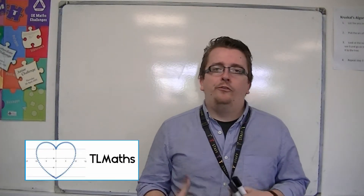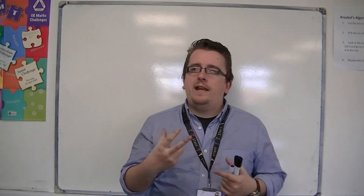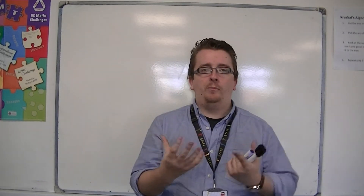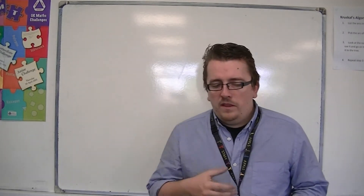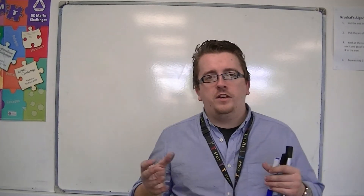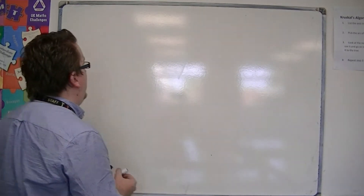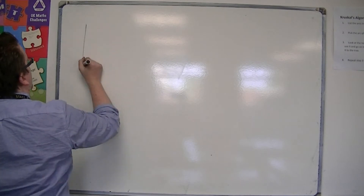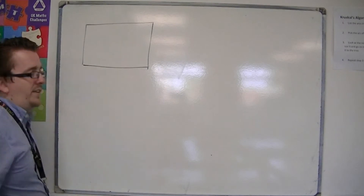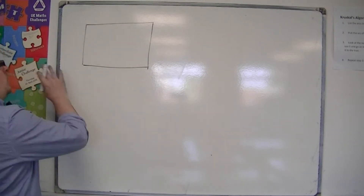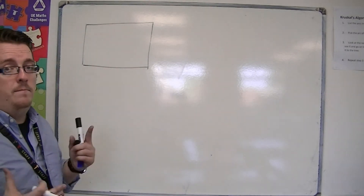One thing that comes from estimation is looking at the smallest and largest possible answers that you could potentially get. I can highlight this quite well with a simple example. Let's say we have a farmer and he has a field — a rectangular field. He measures the length of it to the nearest 10 metres.